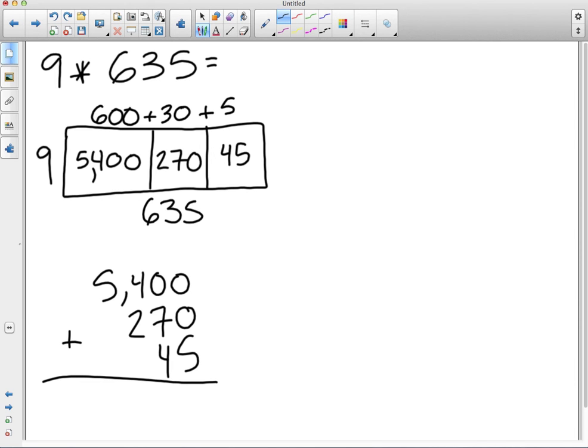Now what do we do? So we start from the ones place. 0 plus 0 plus 5 is 5. And then 7 plus 4 is 11, and we carry in that tens place, we carry the 1 over.